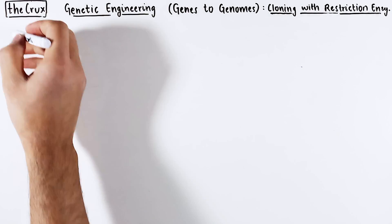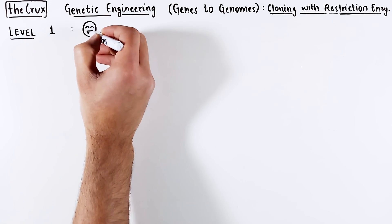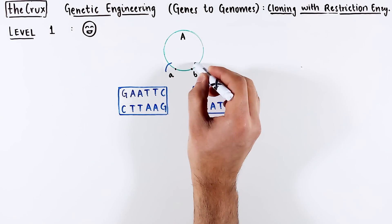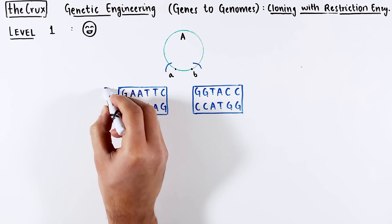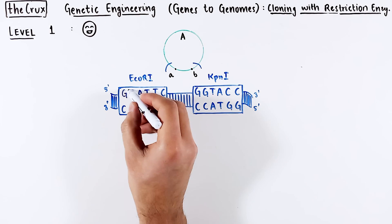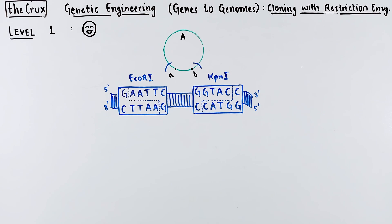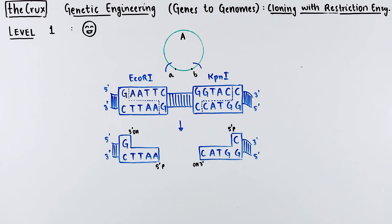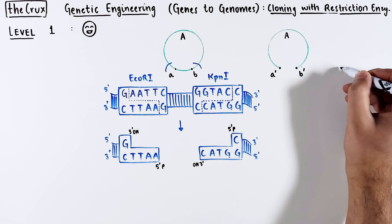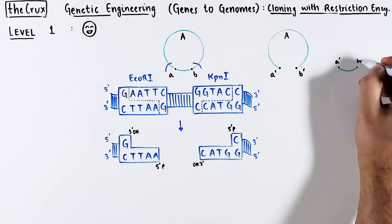Level 1 cloning — even a newborn can do this. Say you get a vector with two sites A and B — these are KPN1 and EcoR1 sites. You digest the vector using these two enzymes and you get L-shaped sticky overhangs. All we have done is cut out and discarded a small piece of DNA from the vector using these two enzymes.